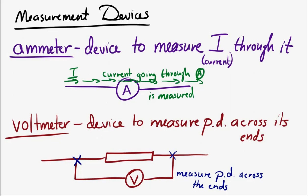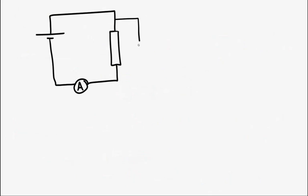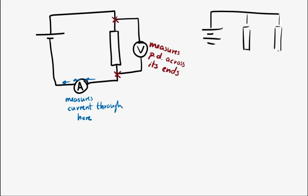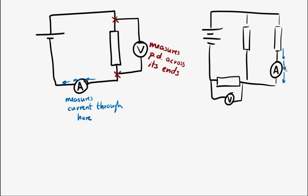Let's draw them in a circuit. If we have a simple circuit with a cell and a resistor, and the ammeter is placed at a certain location, the ammeter will measure the current passing through that point where it's placed. The voltmeter will measure the potential difference across the resistor. We can make more complicated circuits with bunches of resistors and a battery, but keep in mind: the ammeter will only measure the current that goes through it, and the voltmeter will only measure the potential difference across its two ends.